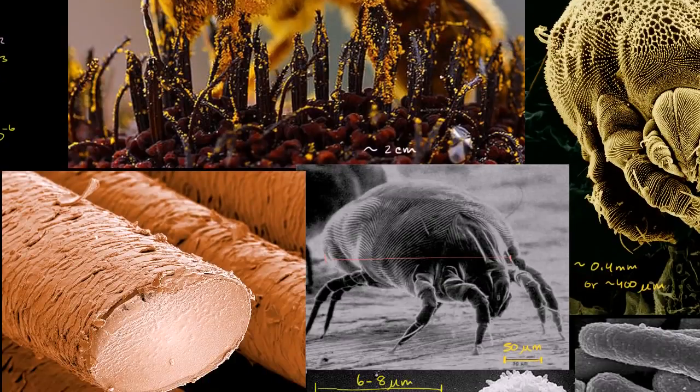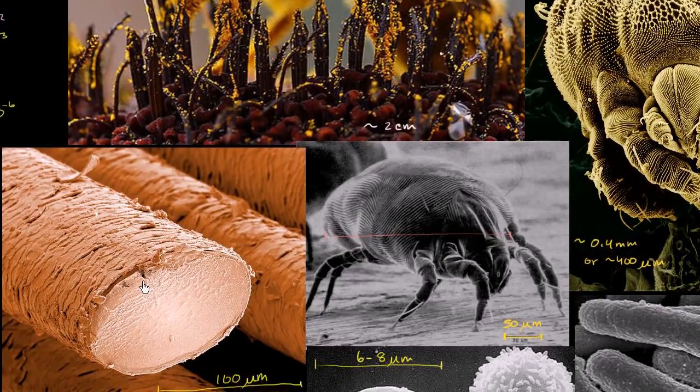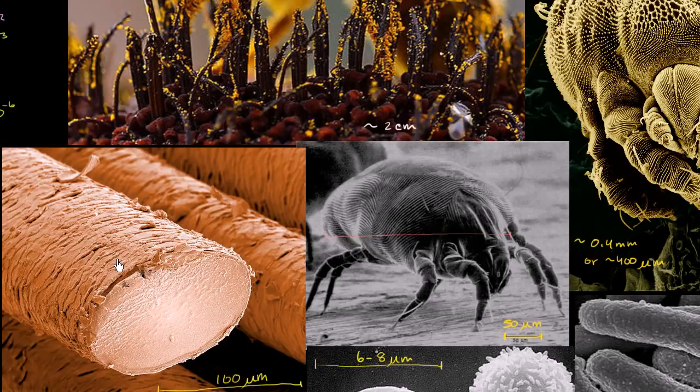This is a zoomed in picture of human hair. And you might say, oh my god, this person has horrible hair. But if you were to look at your own hair under an electron microscope, you'd be lucky if it looked this good. This is probably smooth and silky hair right here.